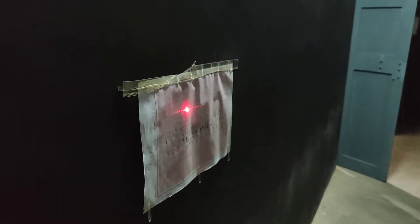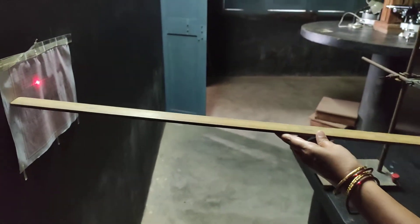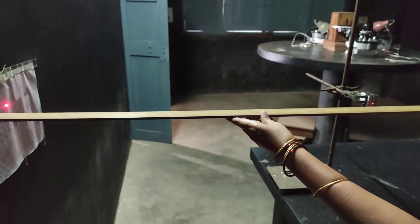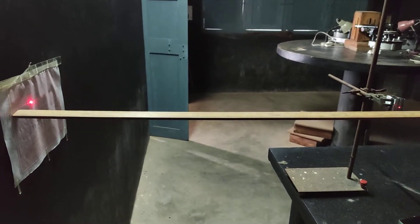Now the screen I have taken as a graph sheet itself so that I can take the readings easily. So to begin with what we have to do is we have to keep the distance between screen and the wire as 80 centimeters using the long scale.